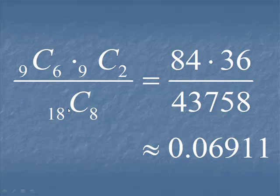So here's the calculation. On the calculator, you'll do 9C6 first. Multiply that by the result of 9C2, and then divide by 18C8. Here is an intermediate step shown. The final result is .06911.